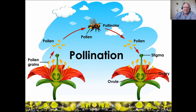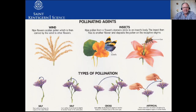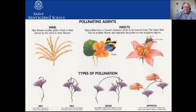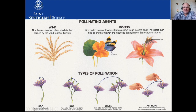Pollination doesn't always involve bees - it can sometimes be the birds and the bees, which is where that joke comes from. It can be bees, butterflies, or wind pollination - like tomatoes, which go through wind pollination. We even have self-pollination.